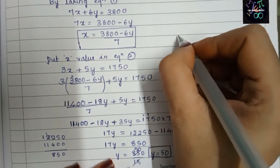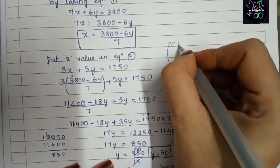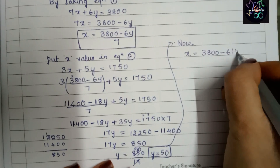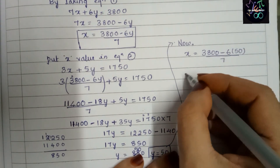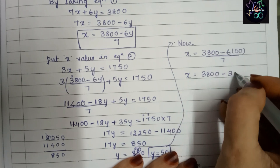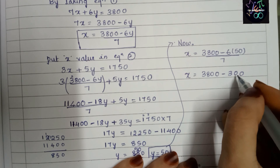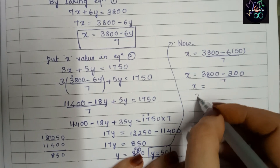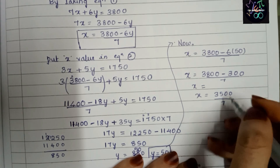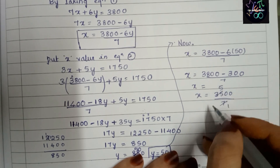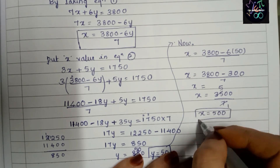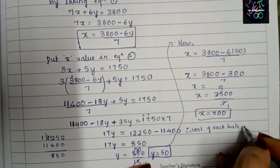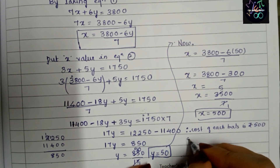Now we find x. Substituting y = 50 back into x = (3800 − 6y) / 7: x = (3800 − 6 × 50) / 7 = (3800 − 300) / 7 = 3500 / 7 = 500. Therefore x = 500.